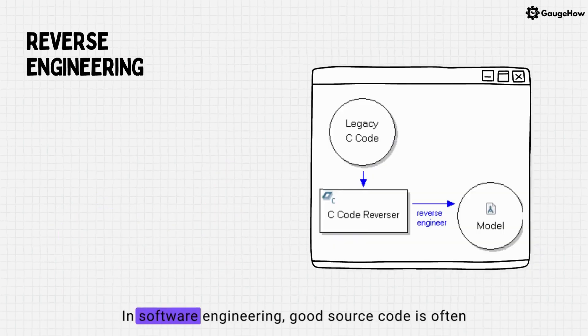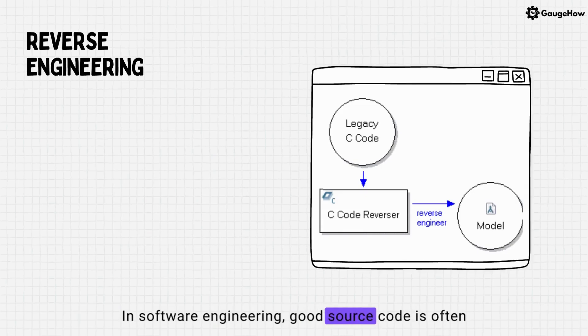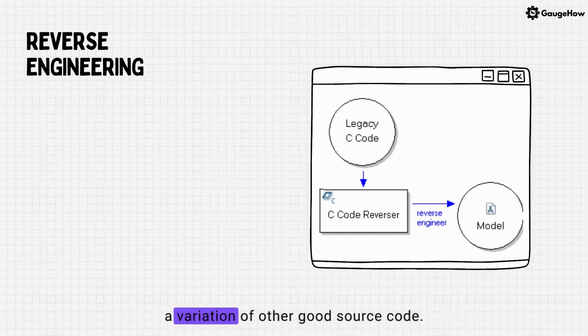In software engineering, good source code is often a variation of other good source code.